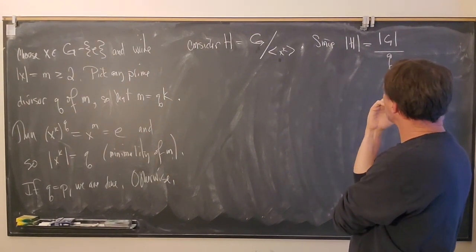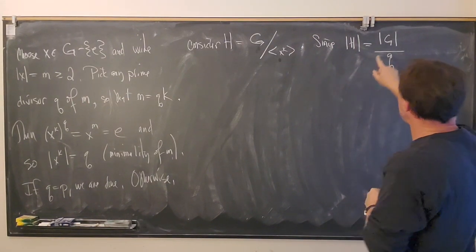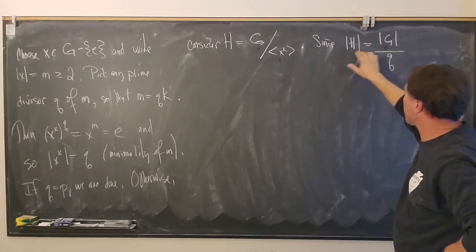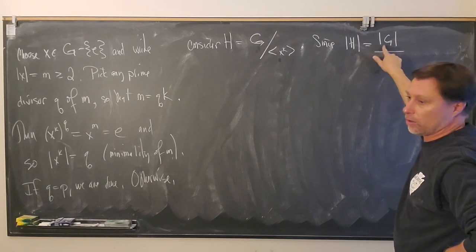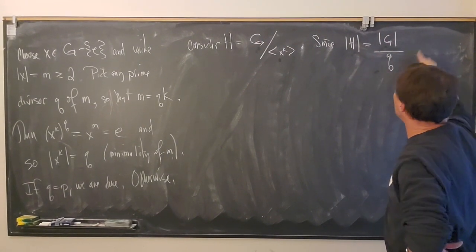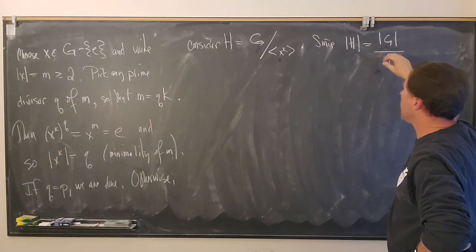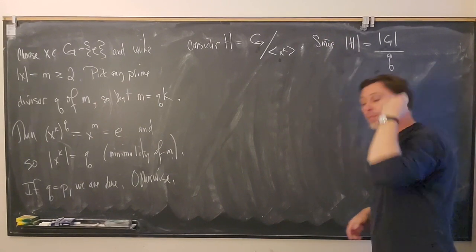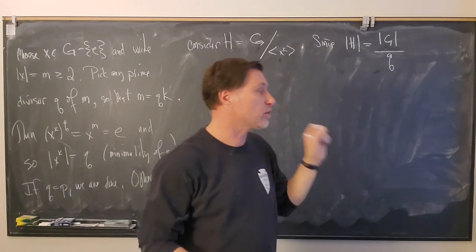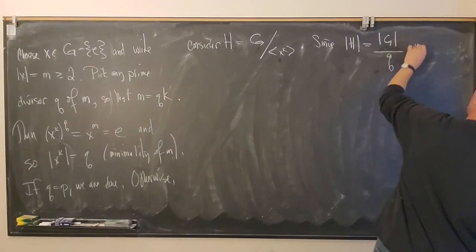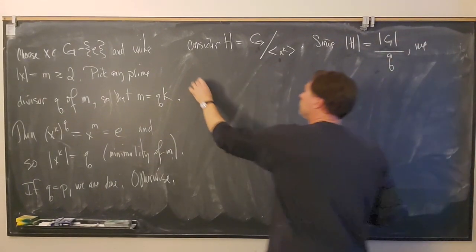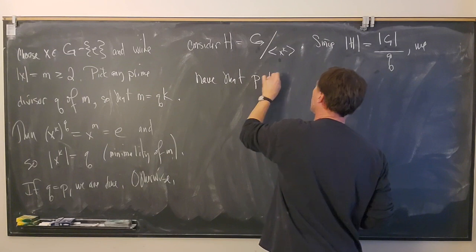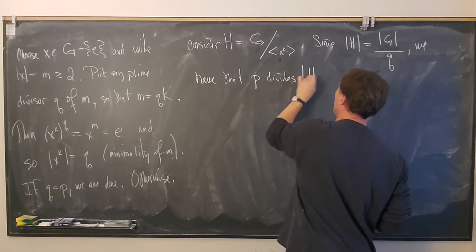Now, p is a prime divisor of the order of G. When we divide out by q in the prime factorization, p is still present — p is still a divisor of the order of H. So p divides the order of H.